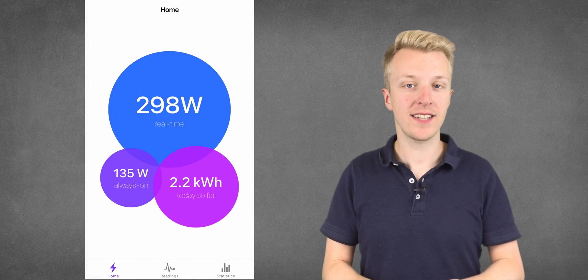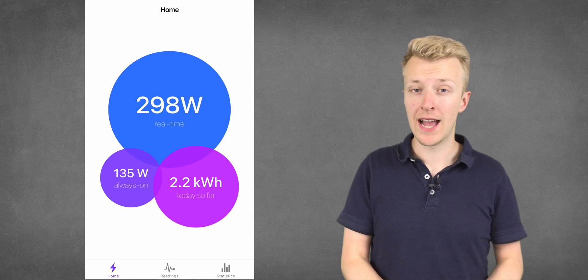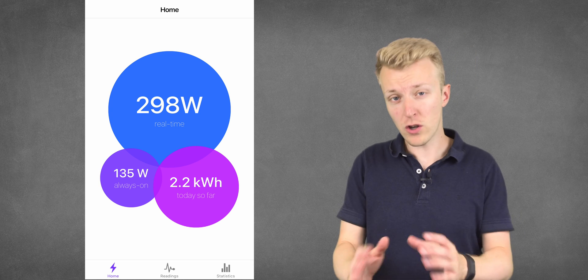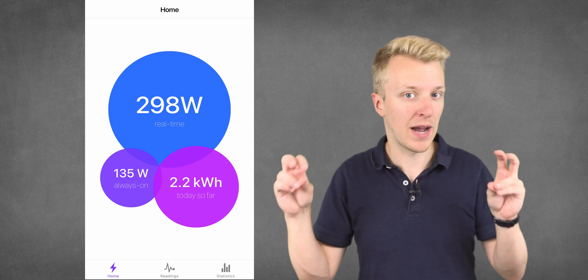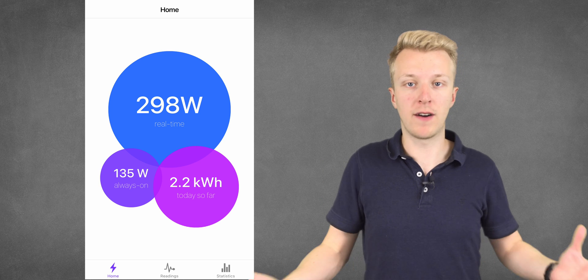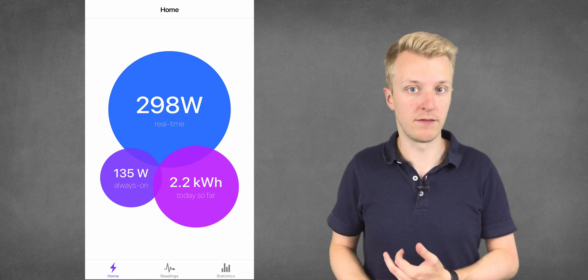On the homepage, I can see how much electricity is currently being used, as well as how much electricity has been used so far today. I also try to calculate the standby power, which is the amount of power that is always being used by devices that are always plugged in, like the fridge or the TV.